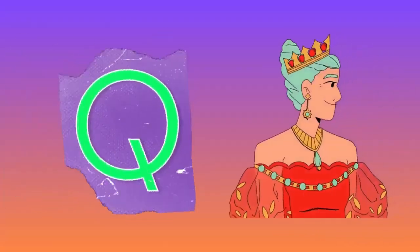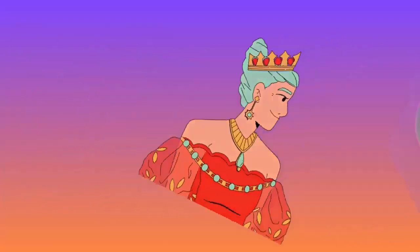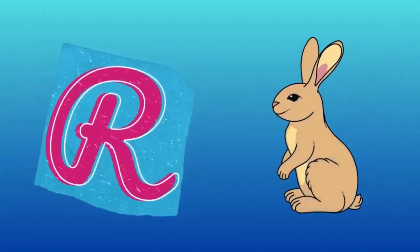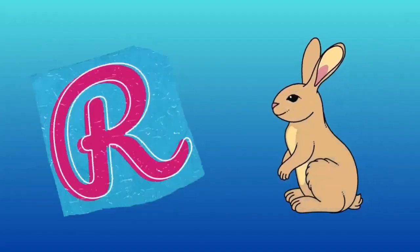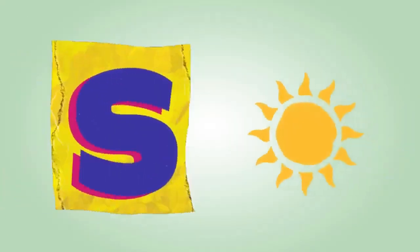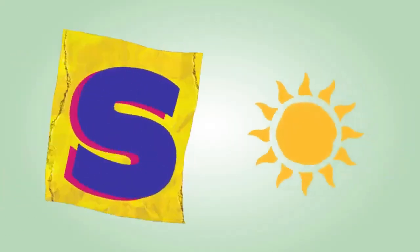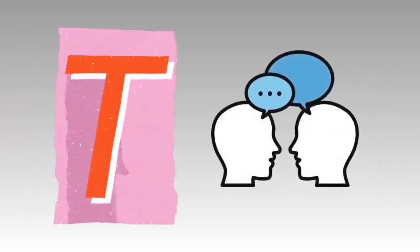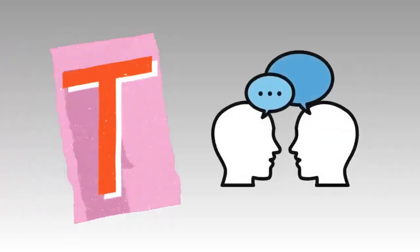Q is for queen, qu-qu-queen. R is for rabbit, r-r-rabbit. S is for sun, s-s-sun. T is for toad, t-t-toad.